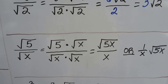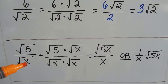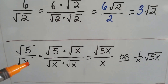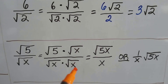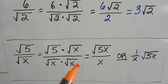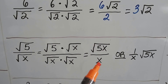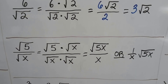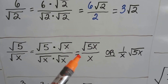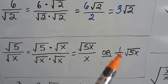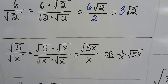Now we've got it over a variable. We can still multiply the numerator and denominator by 1, written as the denominator over the denominator. We end up with the square root of 5x divided by x. We can write it like this, or with the little invisible 1, as 1 over x times the square root of 5x. Either way is okay.